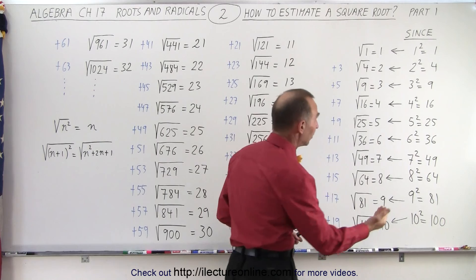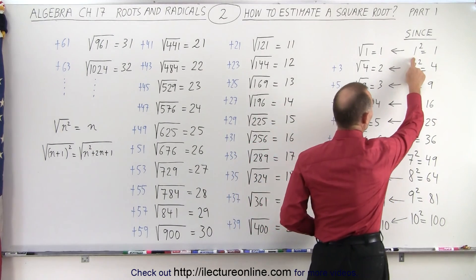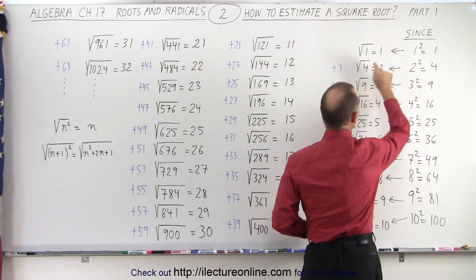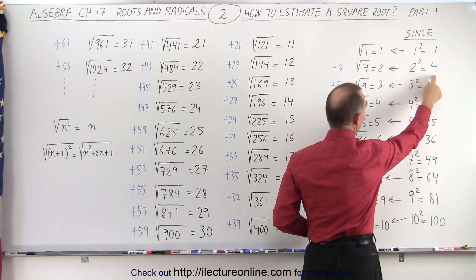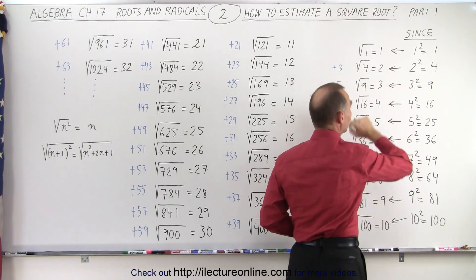And again, the concept is here, that since 1 squared equals 1, the square root of 1 equals 1, or since 2 squared equals 4, the square root of 4 equals 2, and so forth.